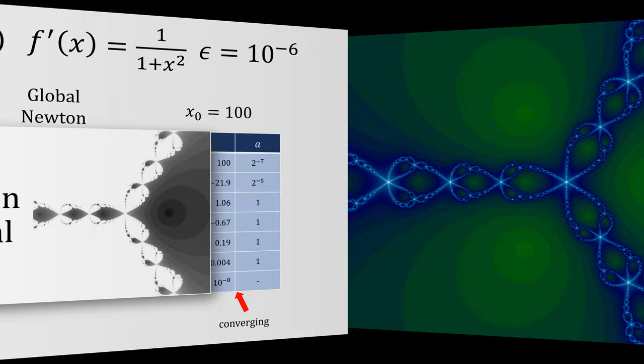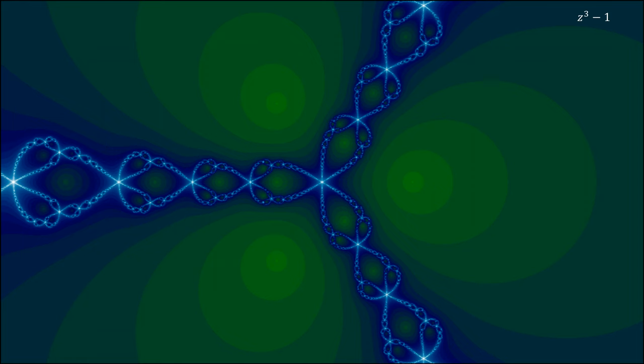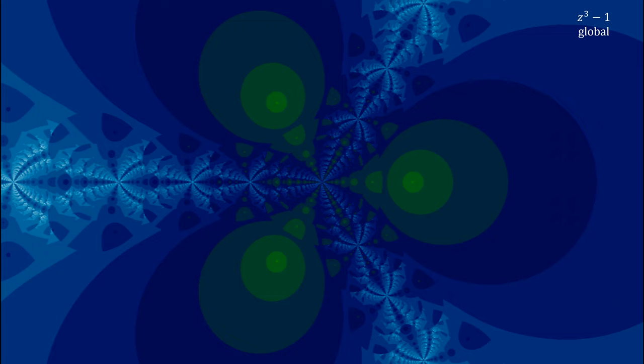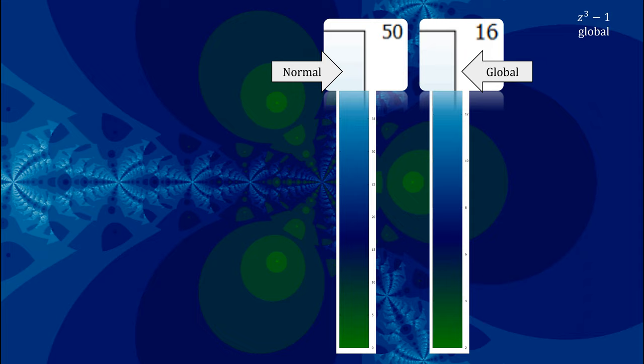Let's change gears now and look at what it does to fractals. Here is the Newton fractal for z cubed minus 1, showing the convergence behavior in the complex plane. And this is how the behavior changes with the global Newton method. You'll notice a lot more blue, which you might think means it's taking long to converge. But when we look at the actual color mappings, it actually converges much faster.